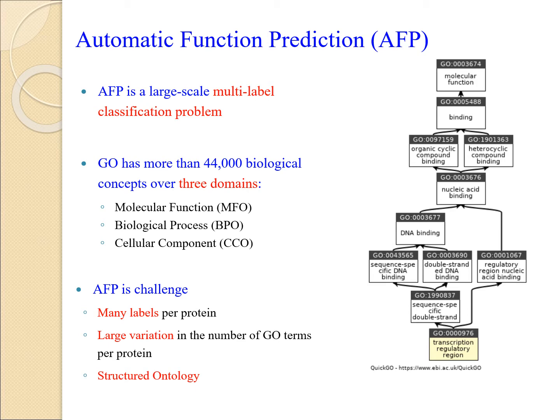GO has more than 44,000 biological concepts, covering three domains: molecular function, biological process, and cellular component. GO has a DAG structure. If a GO term is assigned to a protein, all ancestors of this GO term are associated to this protein too. The graph shows GO terms of protein Q5ADXH in the MF domain.